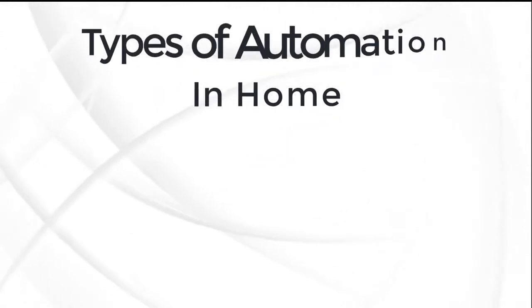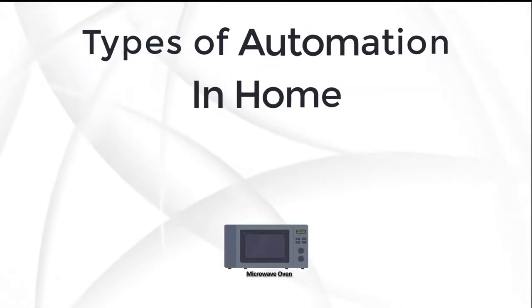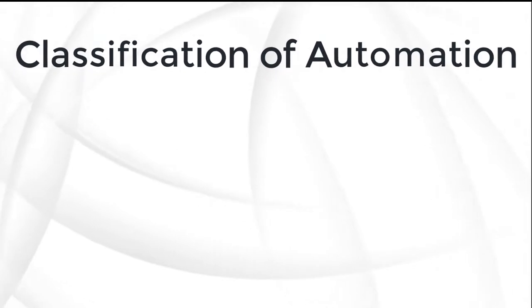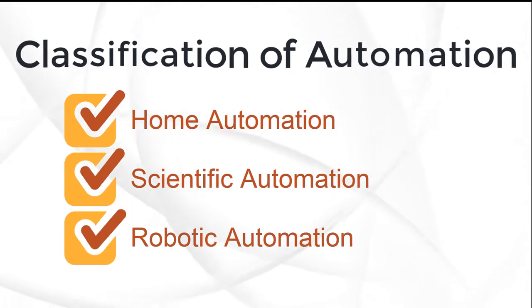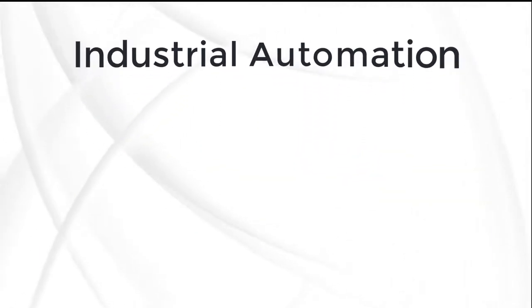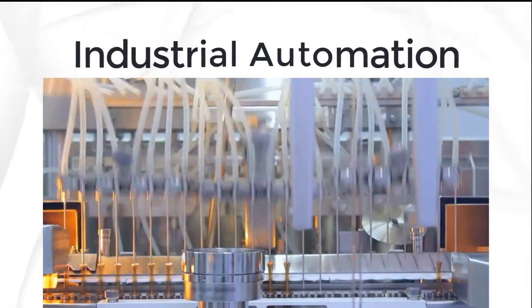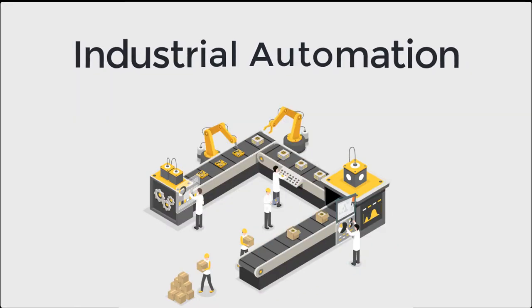There are many types of automation. Even in the home, we can see automation processes in many machines like microwave ovens, washing machines, air conditioners, and many more. Automation can be classified into home automation, scientific automation, robotic automation, and many more. Industrial automation is also one of them — the automation introduced in the industry is called industrial automation. In other words, if we use devices in the industry to complete manufacturing tasks or processes automatically, it is called industrial automation.